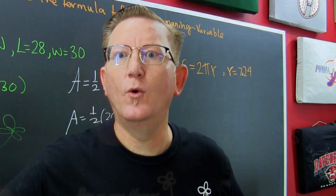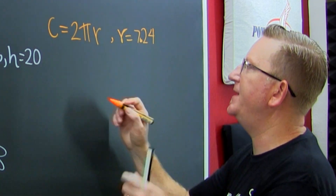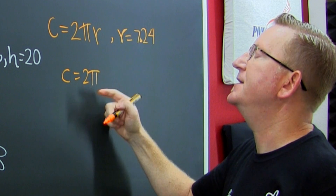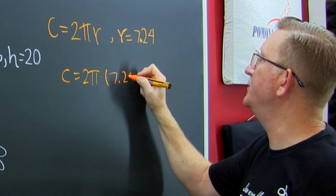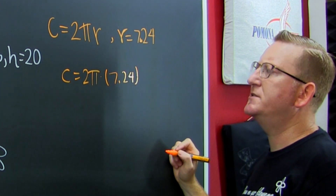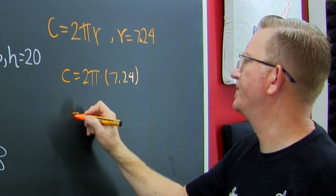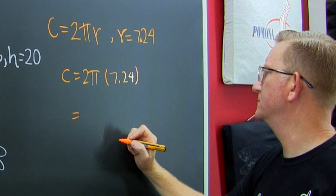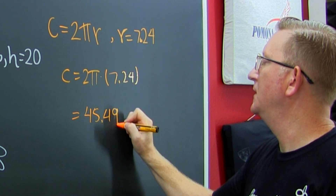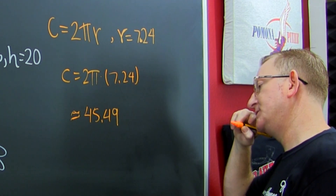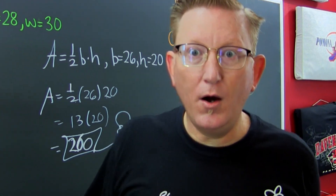All right, two more but I only see one — well, that's where we are right here. C is gonna be 2 pi, because pi is just a number — you gotta treat them all the same — times my R: 7.24. What's 2 times pi times 7.24? 2 times pi times 7.24 is approximately 45.49. And then they wanted it rounded to the hundredths.